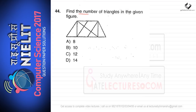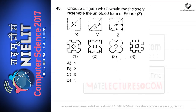Find the number of triangles in the given figure. Counting all triangles gives a maximum of 14, so option D is correct. The next question asks to choose the figure most closely resembling the unfolded form of the given figure; option C (figure 3) is the correct answer.